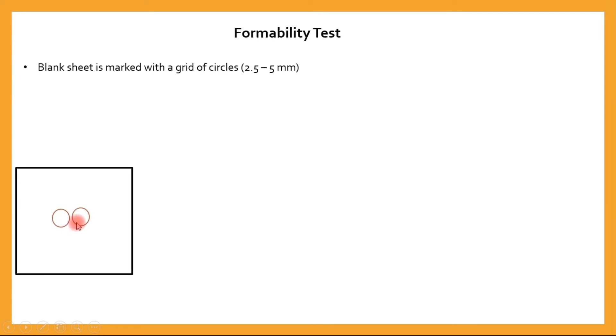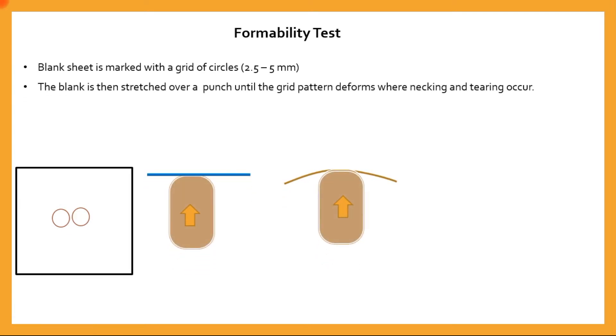This blank sheet is then punched or stretched over a punch until the grid pattern deforms and there is tearing occurring on that pattern.